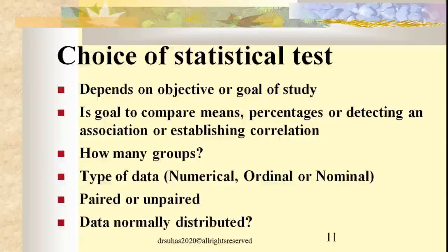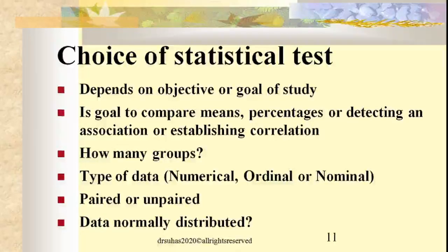Another factor is the number of groups: whether there is one group tested before and after treatment, two groups, or more than two groups. For comparing numerical data between two groups, the unpaired t-test is used. For more than two groups, one-way ANOVA is appropriate. Each combination of groups and number of groups requires a different statistical test.